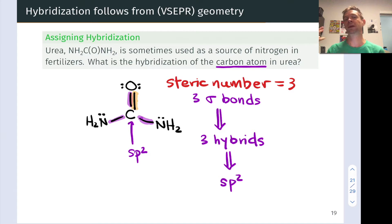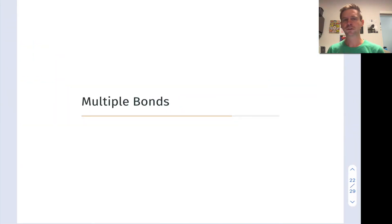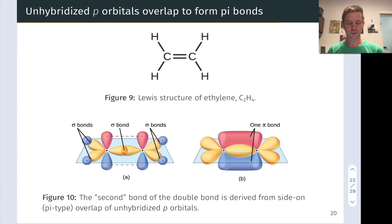The geometry is right for that p orbital to overlap with an adjacent p orbital that's also associated with an sp2 or sp hybridized atom. We'll develop that mental picture in this video and hearken back to foundational ideas about pi bonding from an earlier video. It's all about multiple bonds — the second and third bonds of double and triple bonds — which we've already seen are pi bonds.